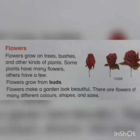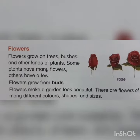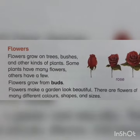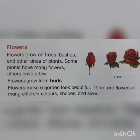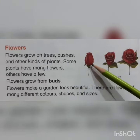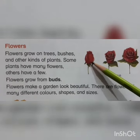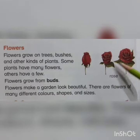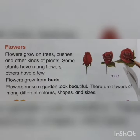Flowers grow on trees, bushes and on many other kinds of plants. Some plants have many flowers and some have only a few. Flowers grow from buds. Look at this picture of a rose — the first picture shows a flower in the form of a bud, and later this bud changes itself into the form of a beautiful rose, a beautiful flower.